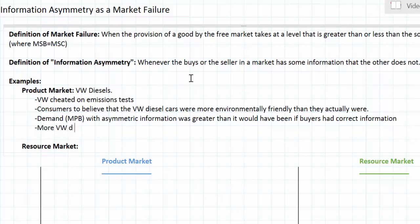...more VW diesels were bought and sold at a higher price than what was actually socially optimal. The asymmetry of information between Volkswagen and all of its customers regarding the environmental impact of their diesel automobiles resulted in more people wanting to buy these cars than what was actually socially optimal. We'll graph this in a moment below.